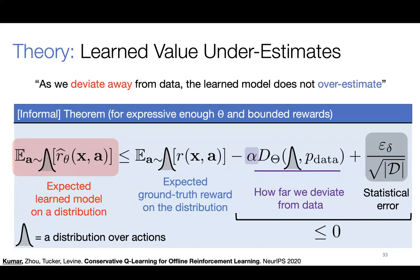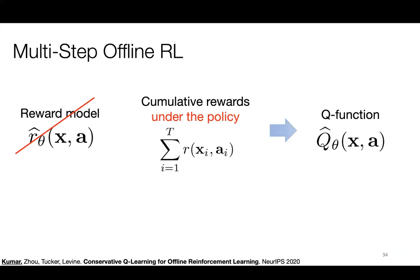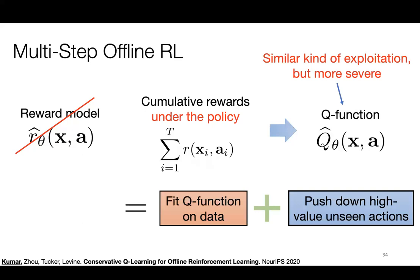One interesting aspect is that the notion of distributional distance is parametrized by your function class. If your reward model only depends on the first three dimensions of your action space, then differences in the other dimensions don't affect the divergence term. So with this procedure, you account for structural invariances in your reward function class. In some ways it's less restrictive than policy constraint approaches. Once you can show this underestimation property, you can show a safe policy improvement guarantee — the performance of the trained policy will always improve upon the average performance of the behavior policy that collected the data.